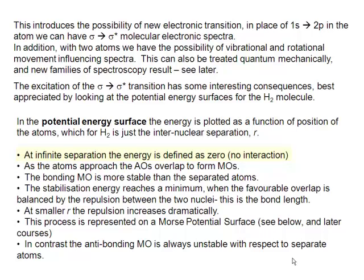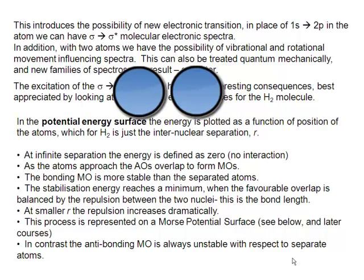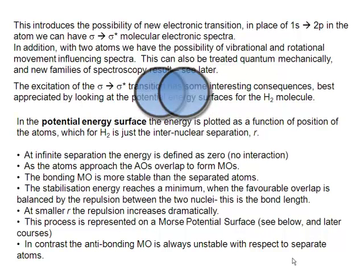As the two atoms approach one another, their atomic orbitals begin to overlap. In the ground state of the hydrogen atom, only the 1s orbitals are occupied. As they approach, those occupied orbitals overlap and begin to form the molecular orbitals. In the case that the molecular orbital is more stable than the separated atoms, you end up with an attractive potential, the energy decreases, and we can start to form a chemical bond.